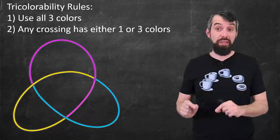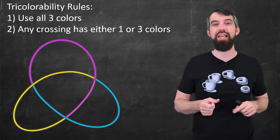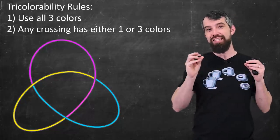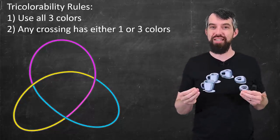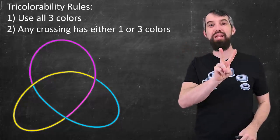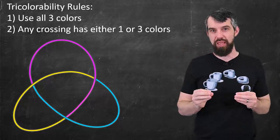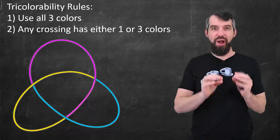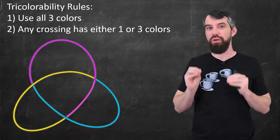Technically, the rules of tricolorability are that for a single link, it uses all three colors. And secondly, that any crossing uses all of one color or all three colors. In other words, you're just going to eliminate the possibility of two colors. So this trefoil knot is a tricolorable knot.